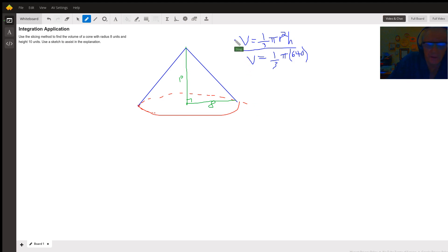But our directions were not to find the volume by using the known formula, but rather to use the volume by slicing. And volume by slicing means we're going to integrate from a to b, A of x dx, where A of x represents the area of a typical cross-section, which in our case is a circle.